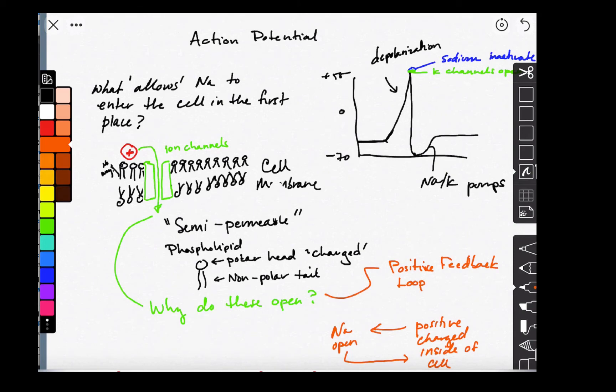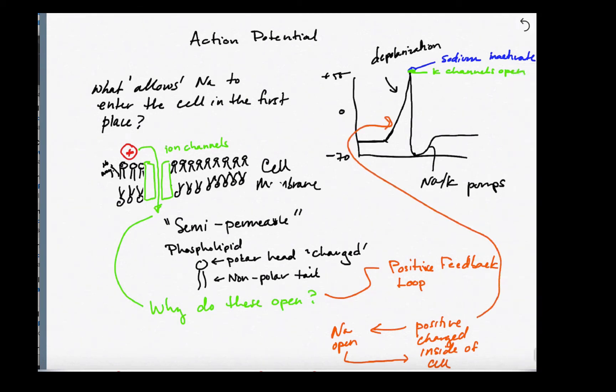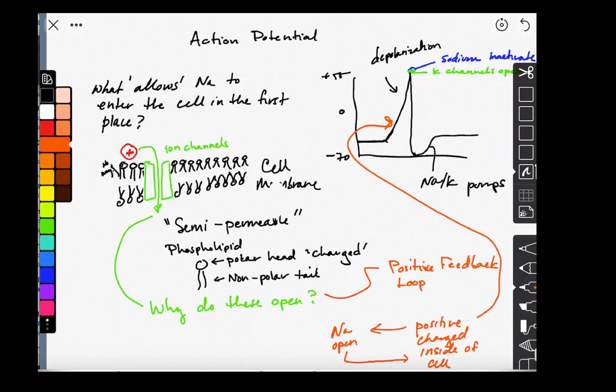Because it keeps going around and around and building on itself. And this positive feedback loop is this part of the action potential right here. That's why that is so sharp.